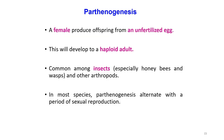Parthenogenesis is a form of reproduction in which an egg can develop into an embryo without being fertilized by a sperm. A female produces offspring from an unfertilized egg, which develops into a haploid adult. This is common among insects such as honeybees and other arthropods. In most species, parthenogenesis can alternate with a period of sexual reproduction.